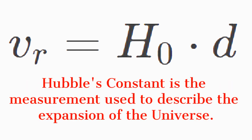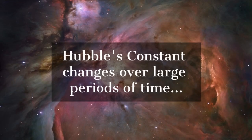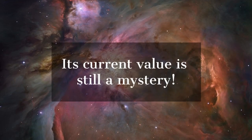H₀, or Hubble's constant, is the unit used to describe the expansion of the universe. It changes over large periods of time, but its current value is somewhat of a mystery.